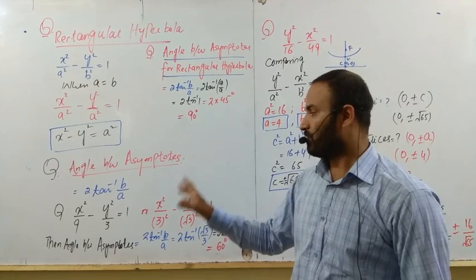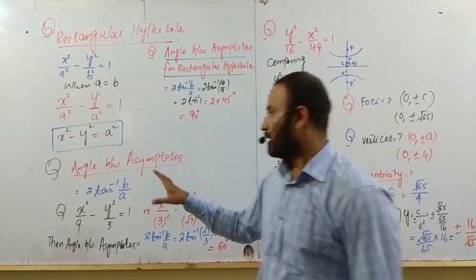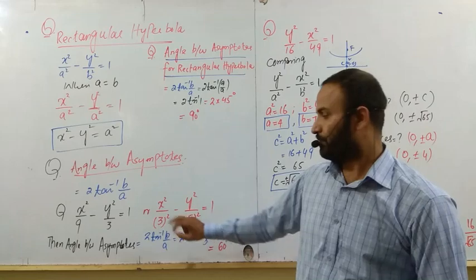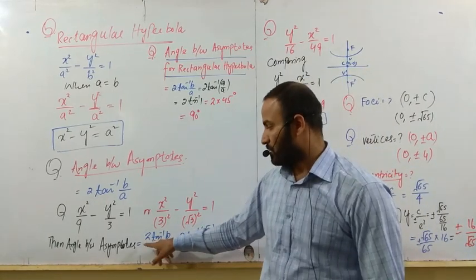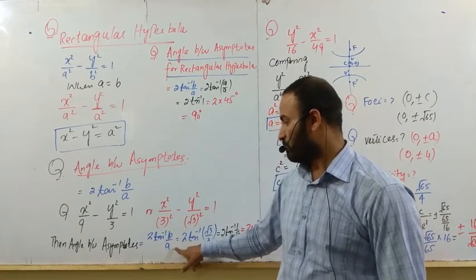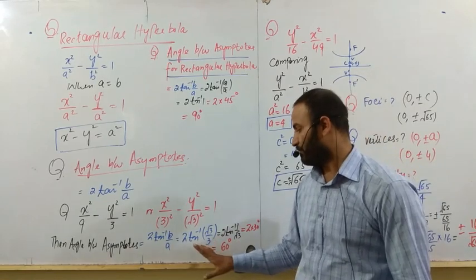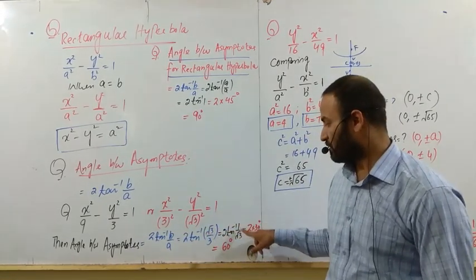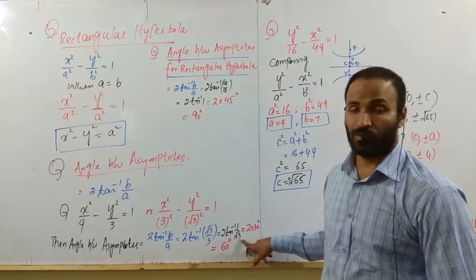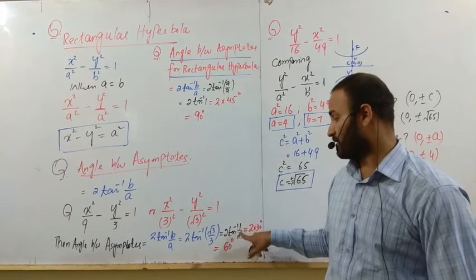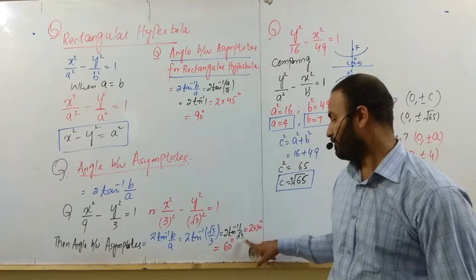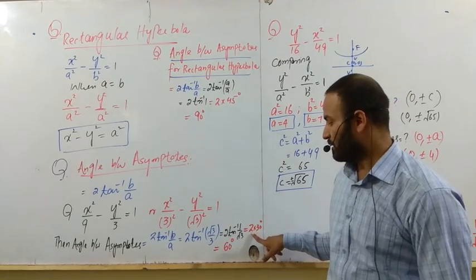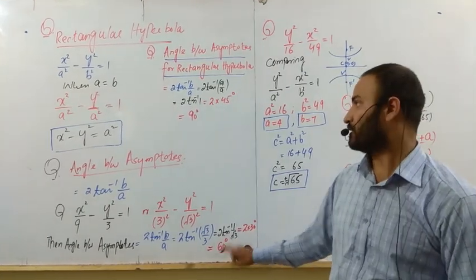If I want to find the angle between the asymptotes for this hyperbola, which is equal to 2tan⁻¹(B/A), put the value of B and A in the equation. You will get 2tan⁻¹(1/√3), and we know tan⁻¹(1/√3) equals 30 degrees. When we multiply with 2 it becomes 60 degrees.